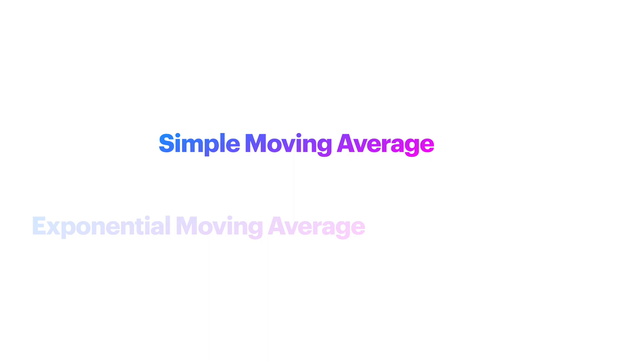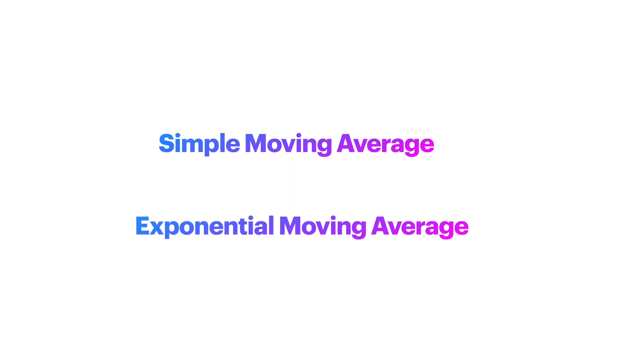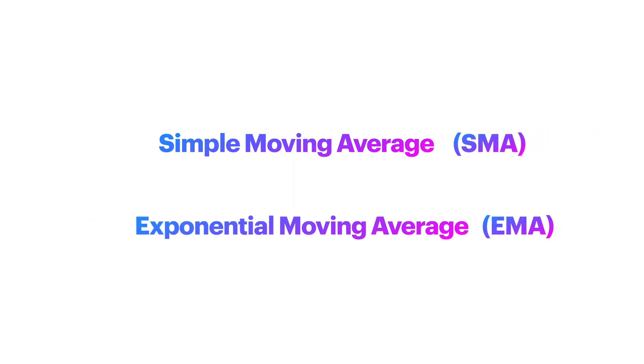In this video we will be discussing the Simple Moving Average and the Exponential Moving Average, or better known as SMA and EMA. These are technical indicators that can provide information about the price trend and price momentum of a security.